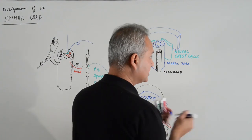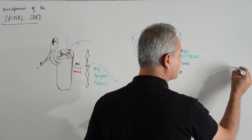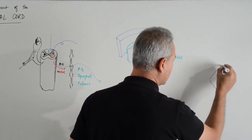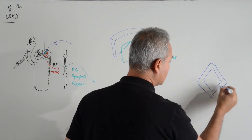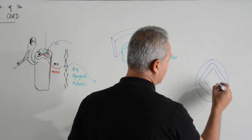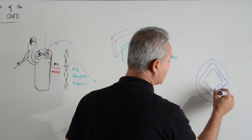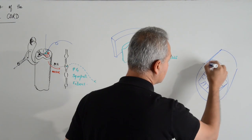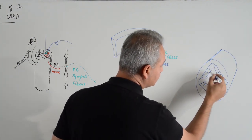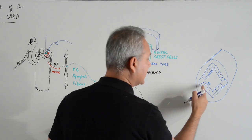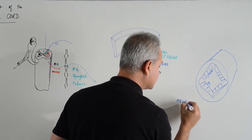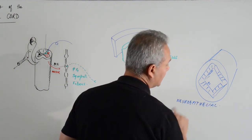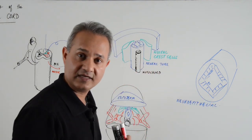We will start from the neural tube. Taking a cross-sectional slice, the neural tube in the beginning looks like a cavity surrounded by cells called neuroepithelial cells. This is what is important — the neuroepithelial cells — because they are going to give rise to the whole gray matter structure present inside the spinal cord.